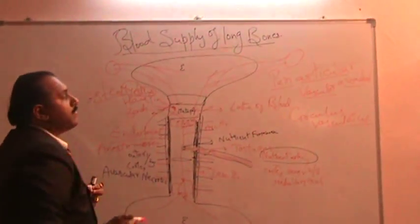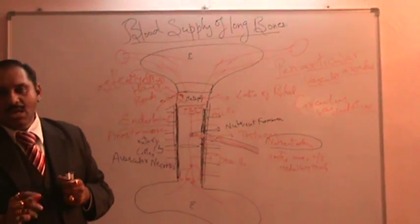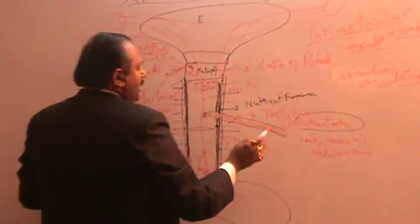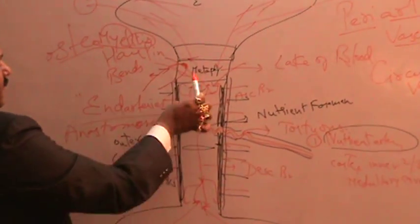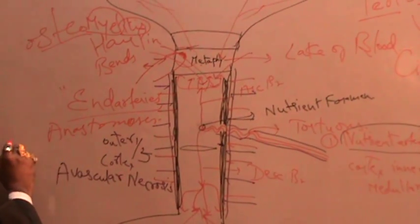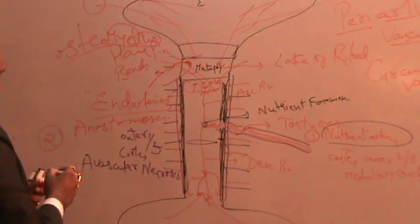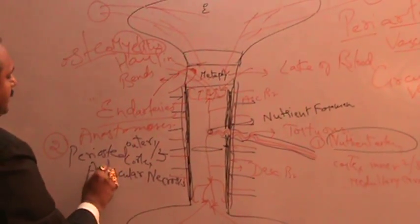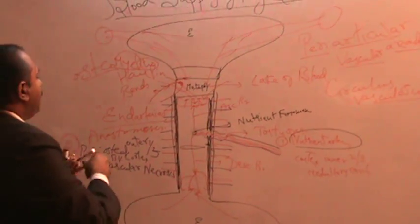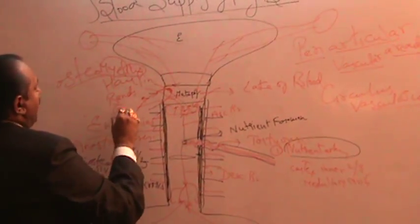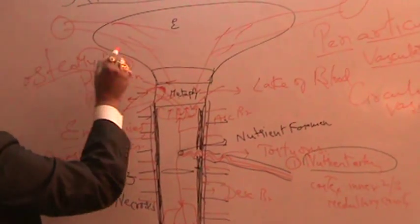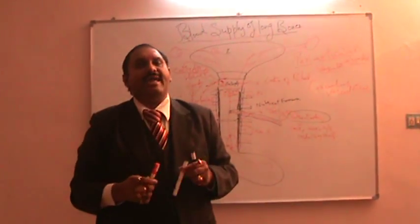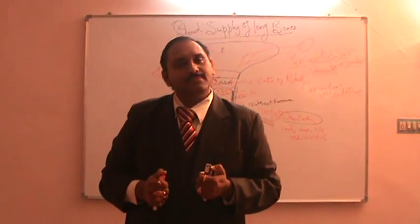To summarize, there are four types of arteries supplying the long bone: first, the nutrient artery — single, large, and tortuous — entering the nutrient foramen and giving ascending and descending branches; second, the periosteal blood vessels; third, the metaphyseal arteries with hairpin bends; and fourth, the epiphyseal arteries.